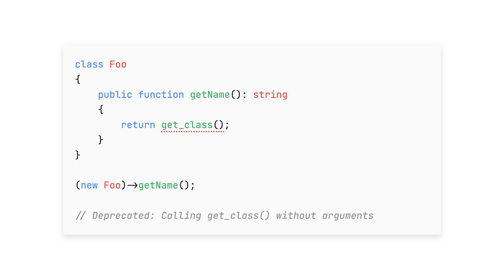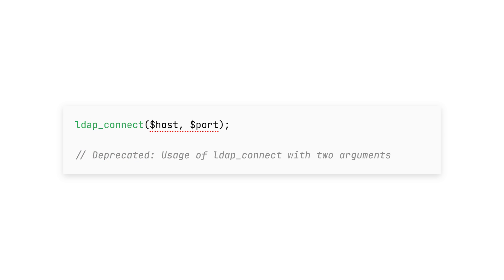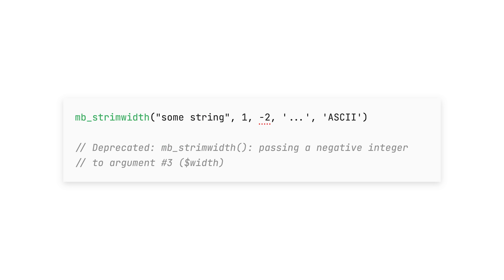The same goes for -- by the way. There's also a deprecation for calling get_class or get_parent_class without any arguments. PHP 9 will remove that possibility, while for now we get a deprecation notice. There are some changes to the FFI API — you cannot call cast, new, or type statically anymore. There are also some function signatures that will change in the future and PHP is already telling you about that today.